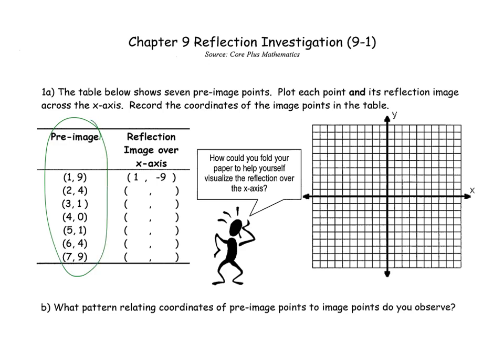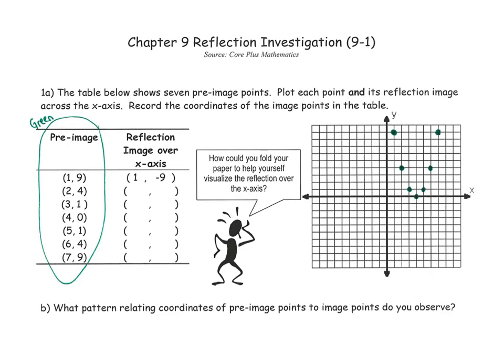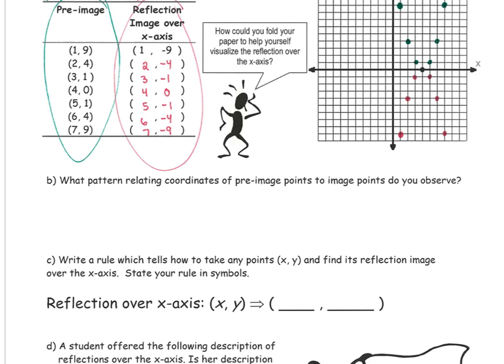We're going to graph the pre-image and figure out an equation or rule for a reflection of an image across the x-axis. Go ahead and plot these points starting at over 1 up 9. I'm just going to graph it green. You might want to do that in your pencil. Then, let's take our red pen and plot these next points. Negative 1, negative 9. It would be 2, negative 4 if we're reflecting over the x-axis. You can finish graphing those points. We can see the pattern relating this is that we have the same x coordinate or x value, but the y value is the opposite. We can write down the opposite y value. The rule would be if I take any coordinate point x, y, the x would stay the same, but the y, we would take the opposite of it.